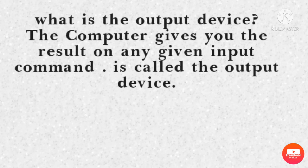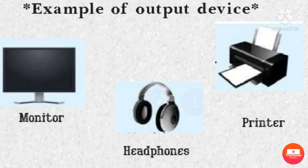अब हम देखेंगे कि हमें किन किन चीज़ों के जरिये output device का result मिल सकता है। यहां पर आपको कुछ examples दिखाए गए हैं, जैसे monitor, printer और headphone। Monitor पर जो हमारा result आया हुआ है, हम उसे monitor के ऊपर देख सकते हैं।